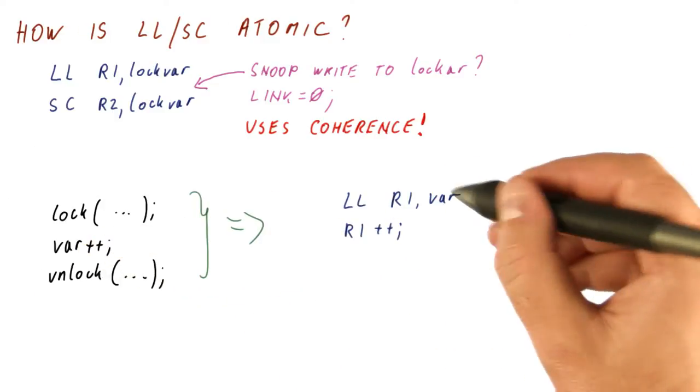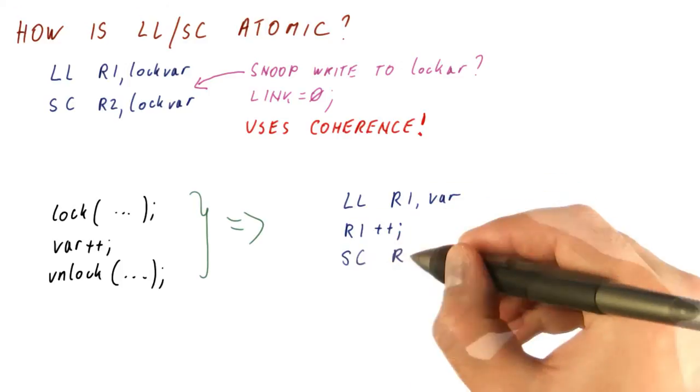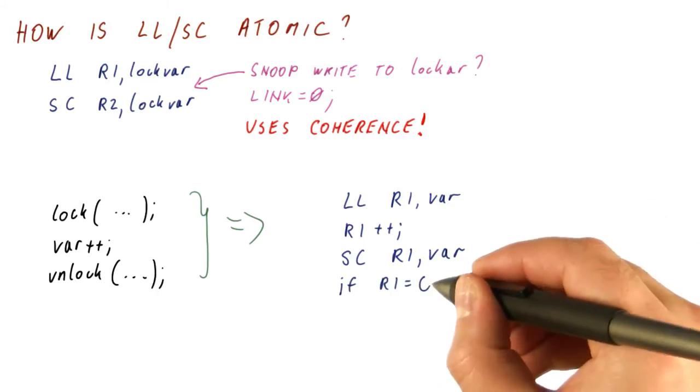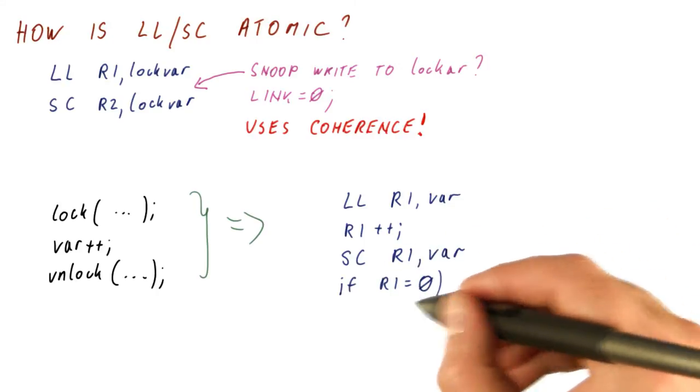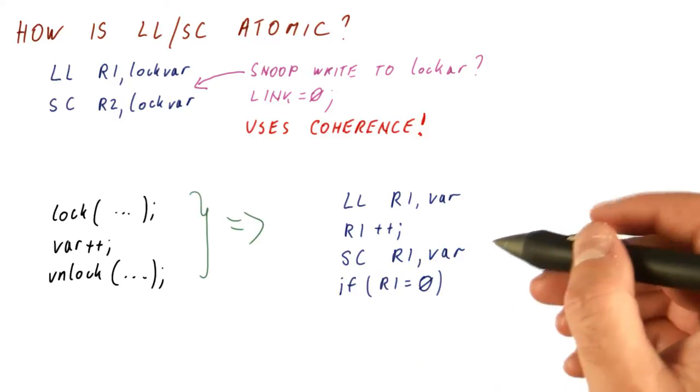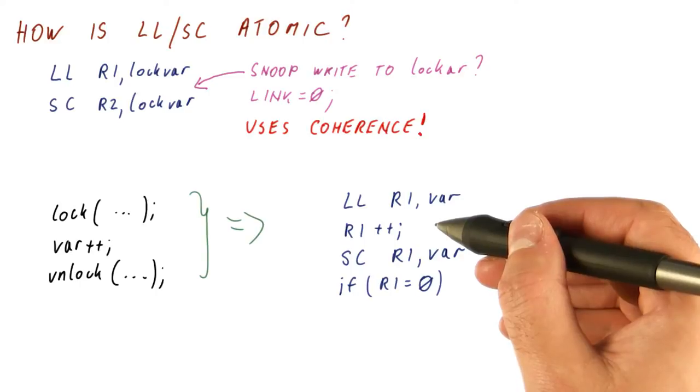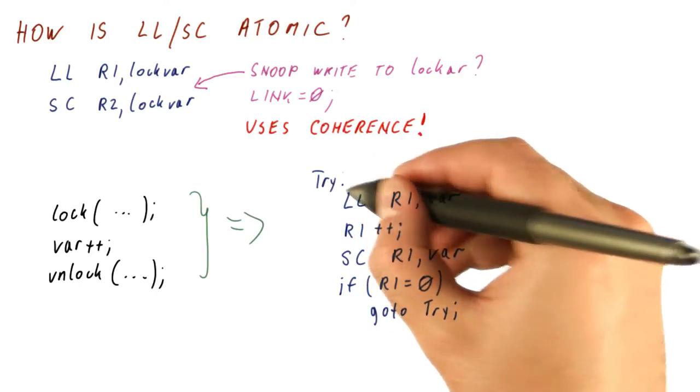By load linking the variable itself into R1, incrementing R1, store conditional of R1 back into the variable, and now we need to check if the R1 as a result of the store conditional became a zero, in which case somebody else was trying to do the same thing, and we didn't succeed in doing this atomically, in which case we just try again.